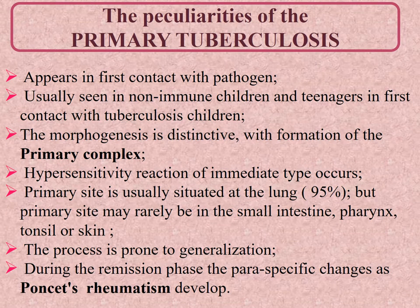The peculiarities of primary tuberculosis are: it appears on first contact with the pathogen, usually in children and teenagers. Due to the absence of immunity against TB, morphogenesis is distinctive with formation of the primary complex. The primary site is usually situated at the periphery of the right lung (95%), but may also be in the small intestine (4%), or very rarely (1%) in the pharynx, tonsil, or skin.